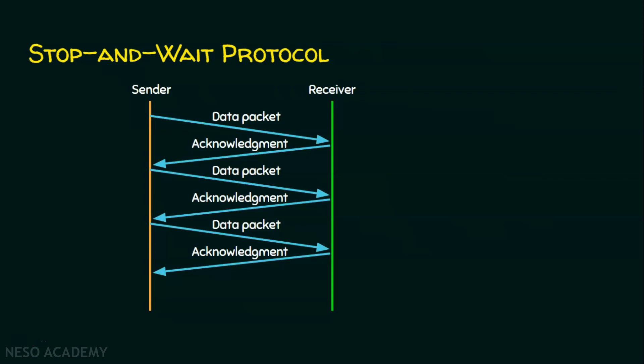The main advantage of the stop and wait protocol is its simplicity. But the main disadvantage is that if there are 1000 packets, all 1000 cannot be transmitted at the same time — they must be sent one by one, waiting for an acknowledgement before sending the next packet. So there are some problems with the stop and wait protocol.